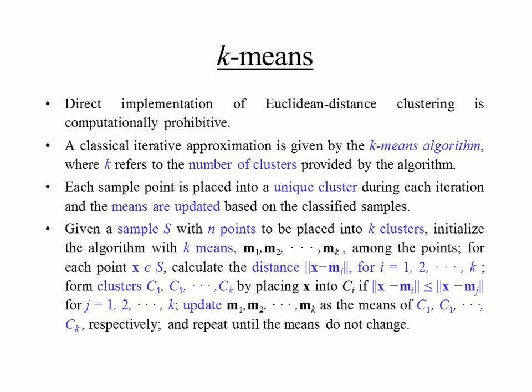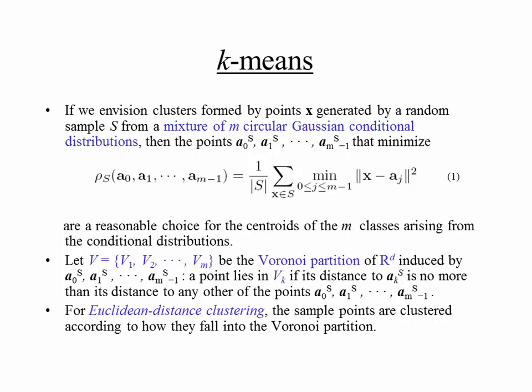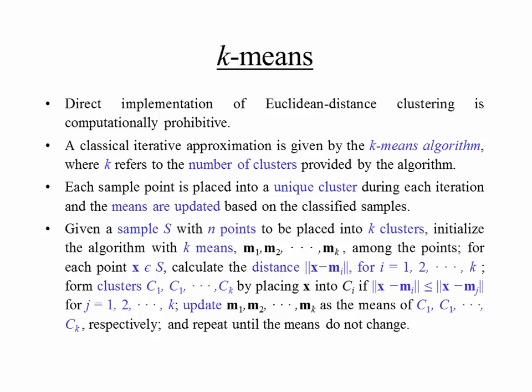Direct implementation of Euclidean distance clustering is computationally prohibitive — you don't know where the centroids are, so you have to pick them, then minimize over all possibilities. It's a chicken-and-egg problem. To avoid that, you use an iterative procedure. A classical iterative approximation is the K-means algorithm. The notation switches from M to K because the means are being called M, so K refers to the number of clusters.